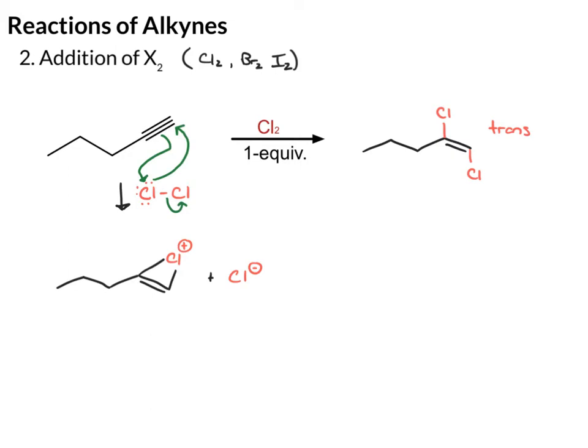From there, just like we saw with the alkenes, the chloride ion will add to one of the carbons of this intermediate, open it up, and give the product.